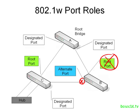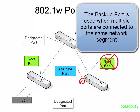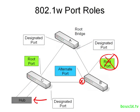The backup port is used when a switch has two connections to the same ethernet segment, which is often done with a hub. Here we have a hub, and switch C has two connections to it. One of those two connections will be the designated port, and the other will be the backup port, which will be in a blocking state as well. However, should the designated port fail, the backup port can be used to keep connected to that ethernet segment.